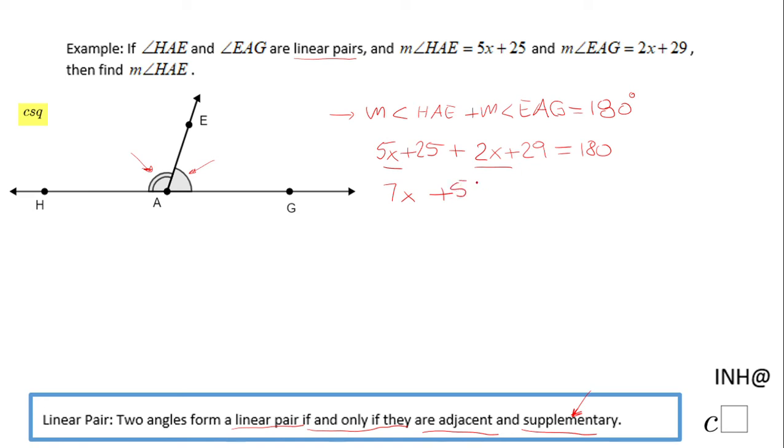So in this two-step equation, the first thing we're gonna do is subtract 54. We have 7x equals 126. In the last step, divide by 7, and we have x equals 18.